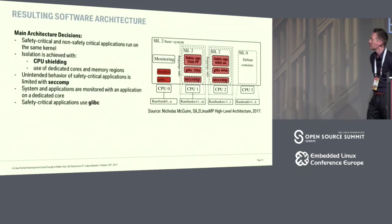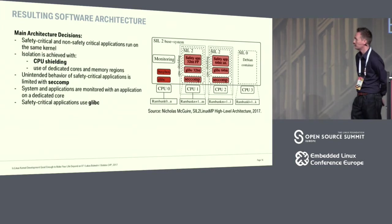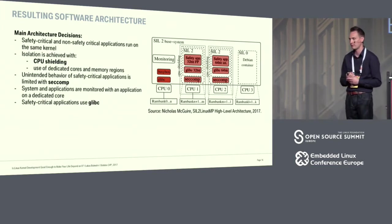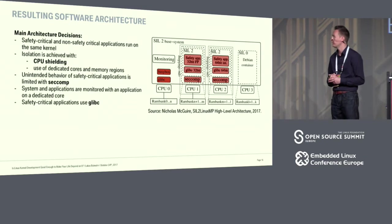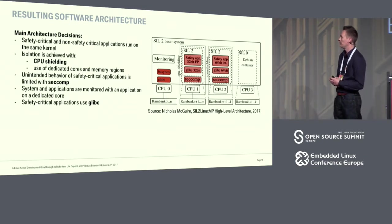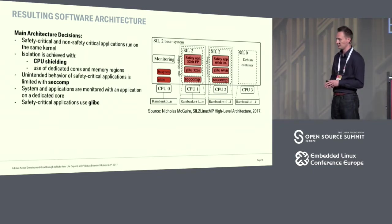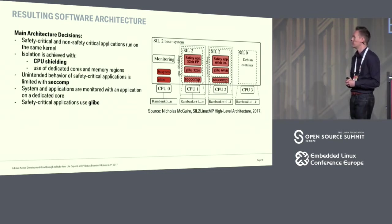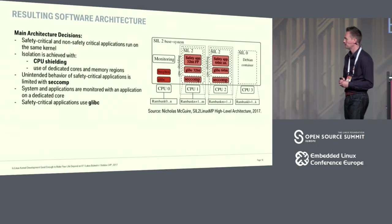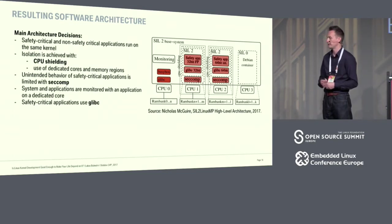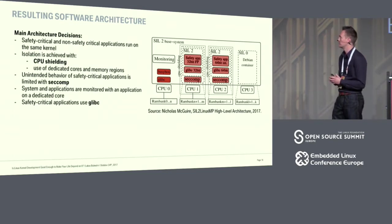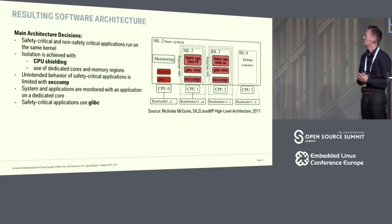After this analysis, we arrived at the following software architecture: safety-critical and non-safety-critical applications run on the same kernel, with isolation achieved through CPU shielding using dedicated cores and memory regions. We identify unintended behavior of safety-critical applications with SECOMP. The safety-critical applications use glibc because that's the library for which we had the most assurance data.